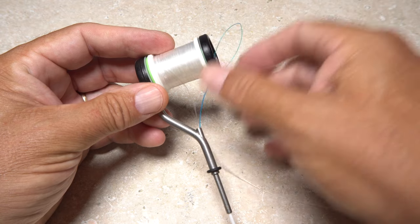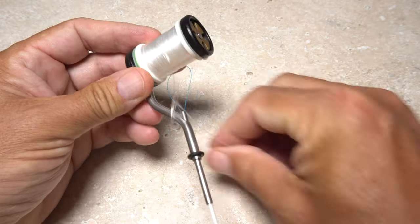Some type of threader, here a dental pick, is usually required to get the thread through the tube.